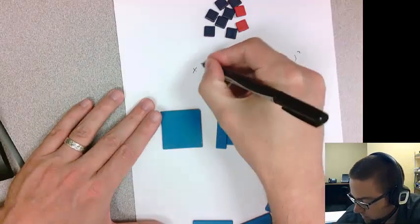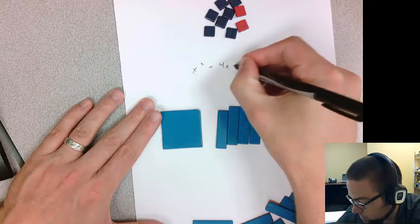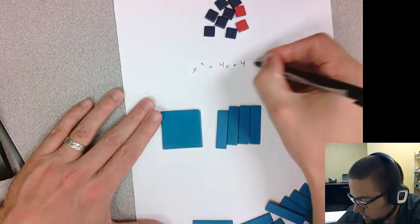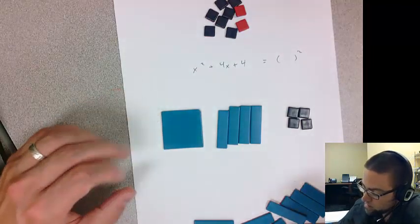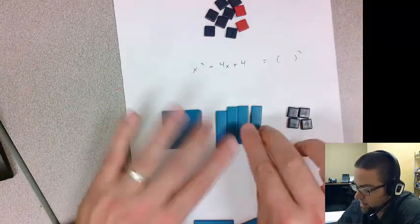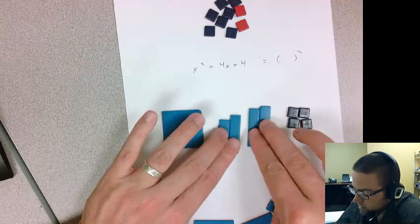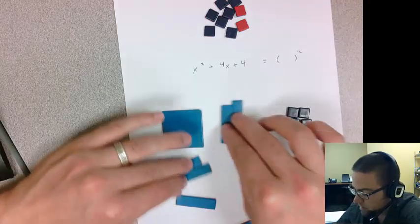Right here we have x squared plus 4x plus 4, and I want to transform it so that it looks something like that. So what I do is I take my x values and I split them in half, and then I can